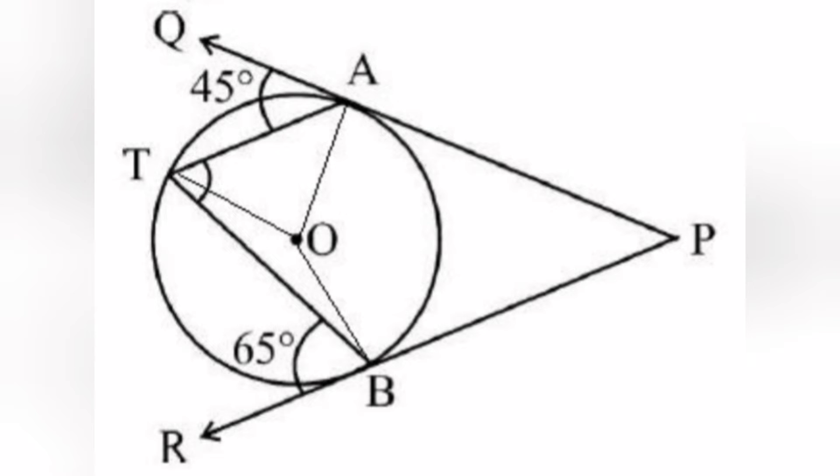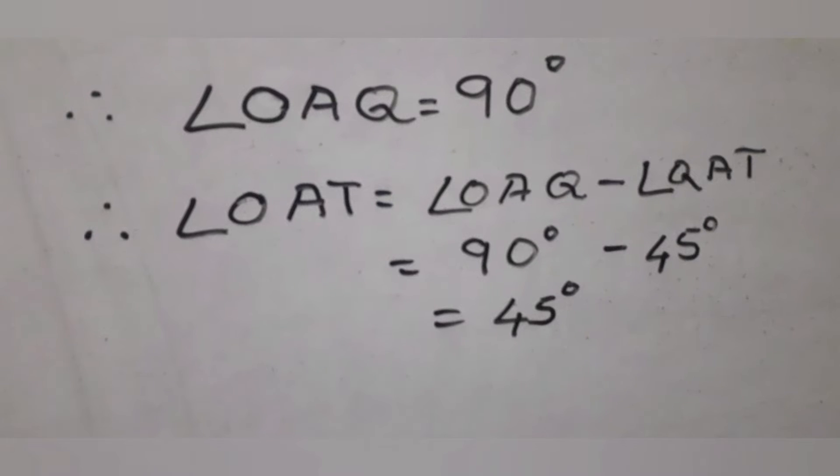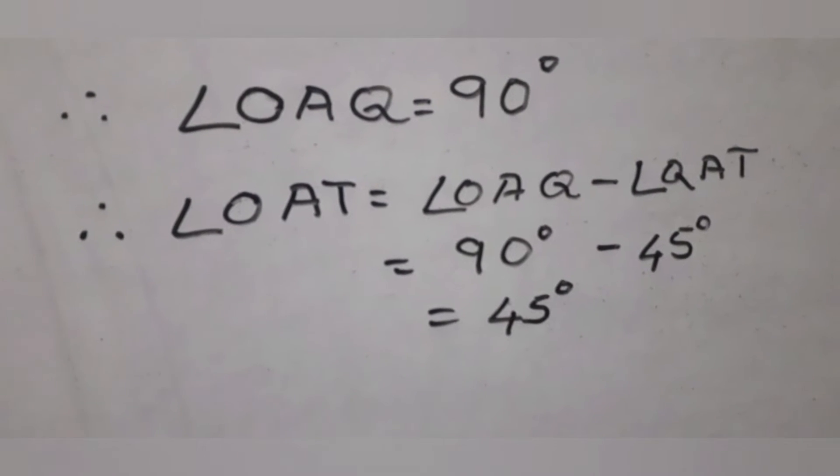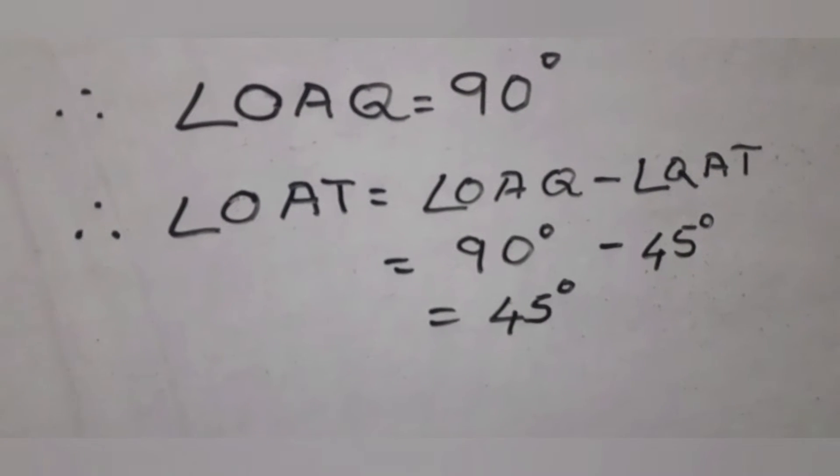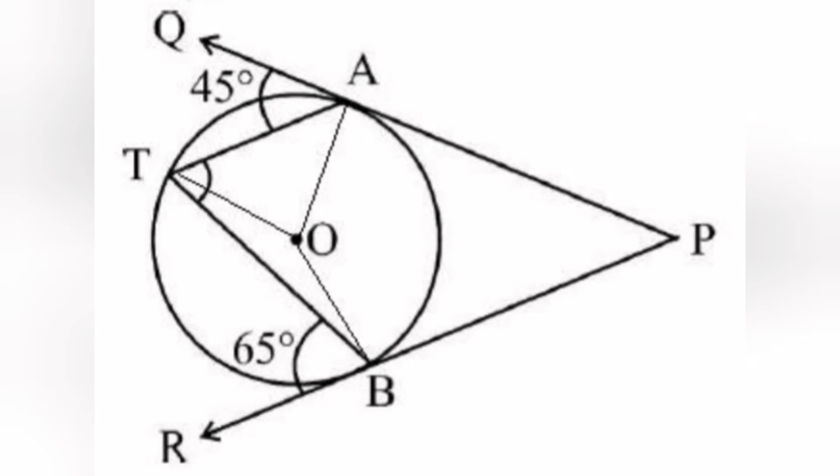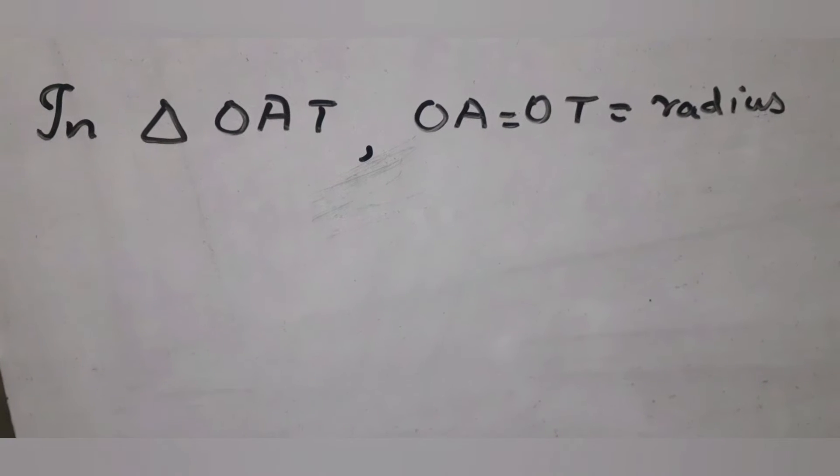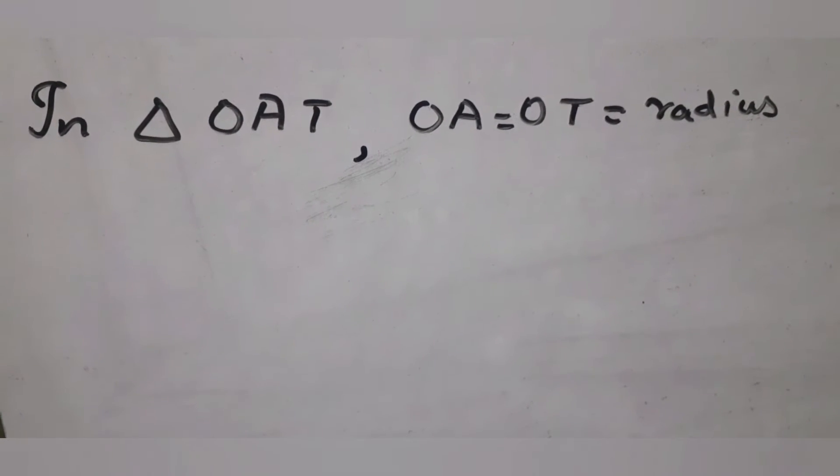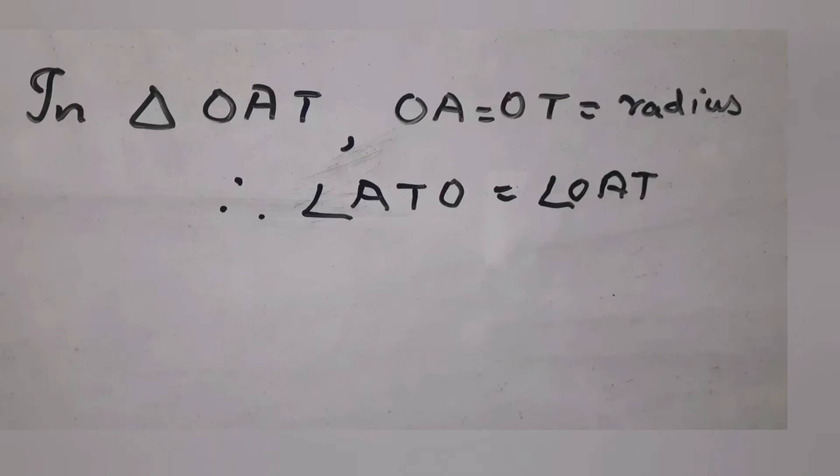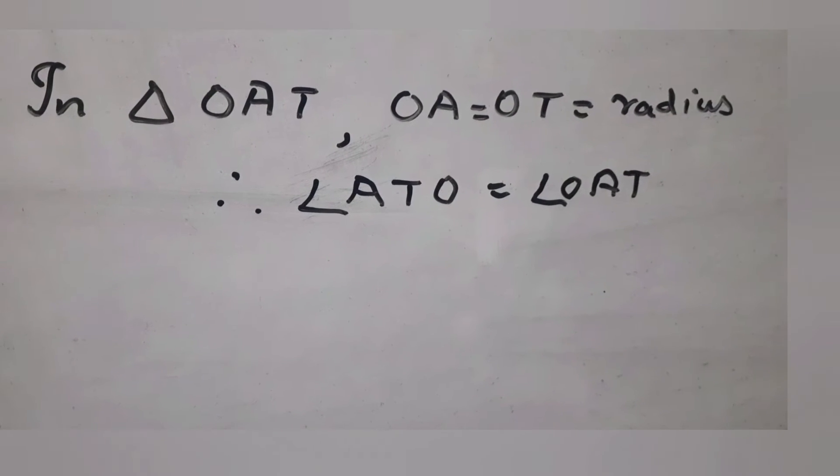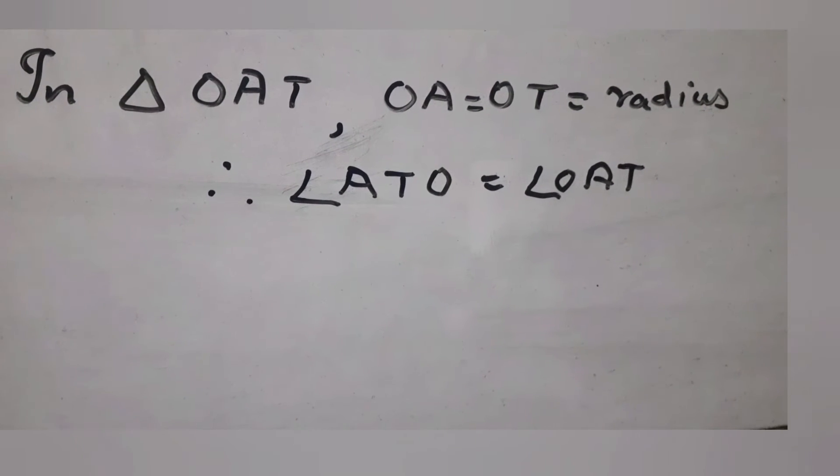So angle OAT equals 90 minus 45 degrees. In triangle OAT, OA and OT are equal because they are radii, so triangle OAT is isosceles. Therefore angles ATO and OAT are equal, so angle ATO equals 45 degrees.